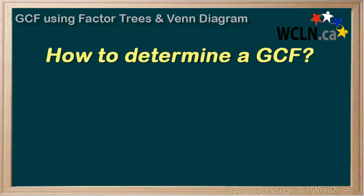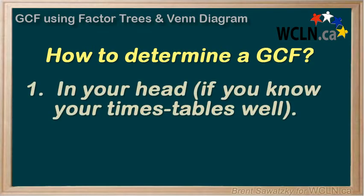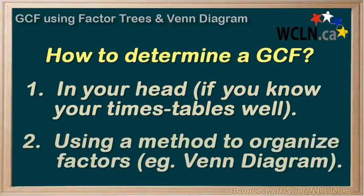There are a number of ways to determine the Greatest Common Factor, or GCF, for two numbers. The better that you are with your times tables, the easier it is to recognize GCFs, and the more of these questions you can do in your head. That said, there's always a point where the numbers become large enough where even the best times table students would like a more methodical way to determine the GCF. So let's look at a methodical way using factor trees and a Venn diagram.